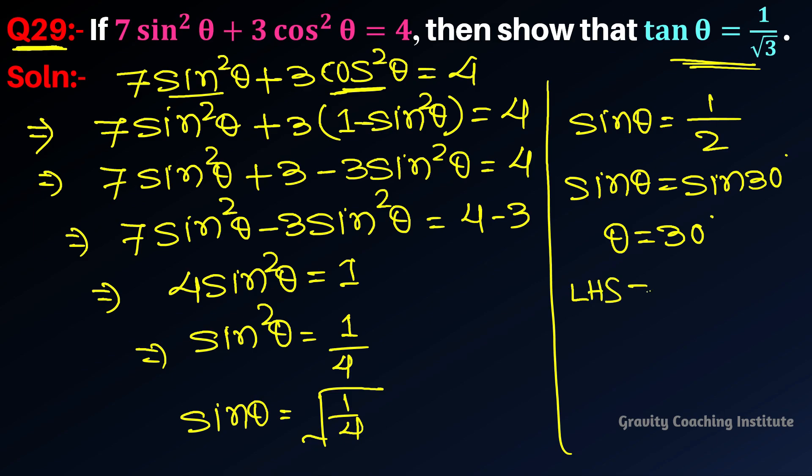LHS = tan θ. We put the value of θ here: tan 30° has the value 1/√3, which equals the right-hand side. Hence proved.